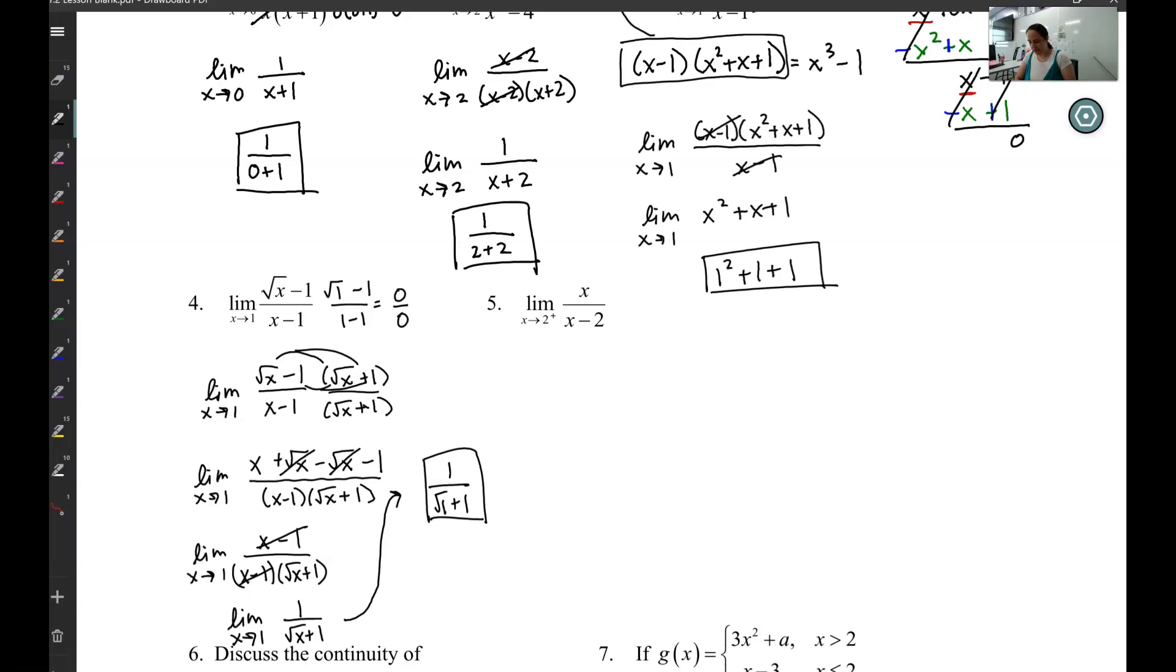Okay, for this last one, I want to do the limit as x goes to 2 from the right. So let's plug this in. I have 2 over 2 minus 2. So this is going to be 2 over 0.